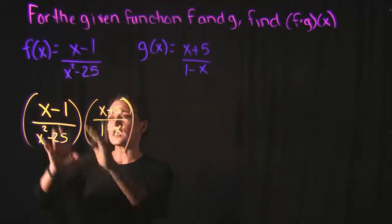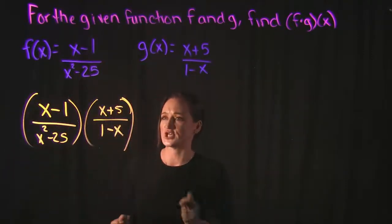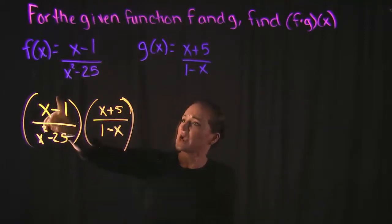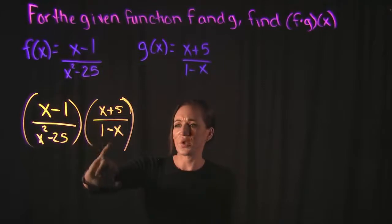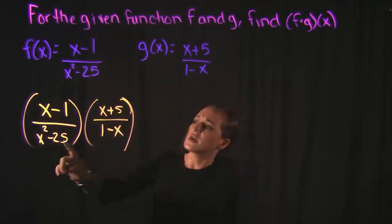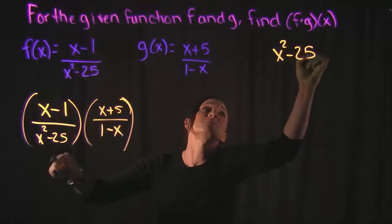So if I take a look at the numerator and denominator for f of x and for g of x, there's only one piece to this that can be factored. x minus 1 can't be factored, 1 minus x can't be factored, x plus 5 can't be factored. But this x squared minus 25, this can be factored.